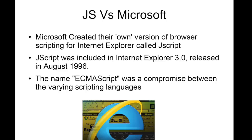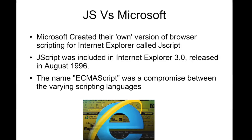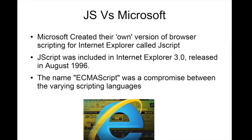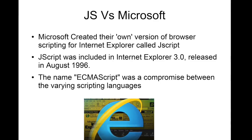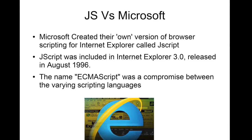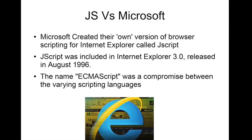Microsoft created their own version of a browser scripting language similar to JavaScript called JScript, which they implemented in Internet Explorer. JScript was included in Internet Explorer 3.0, which was released in August 1996.